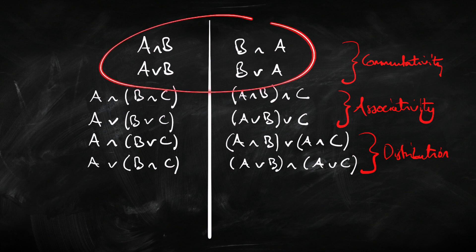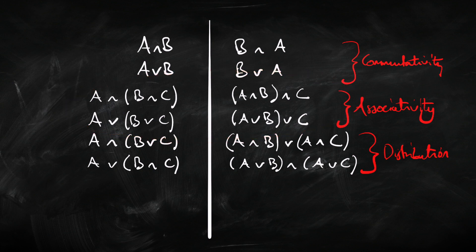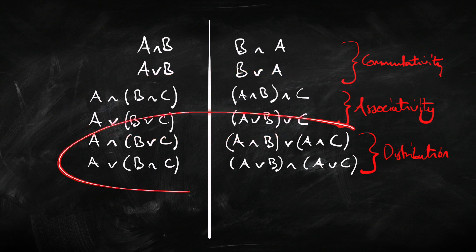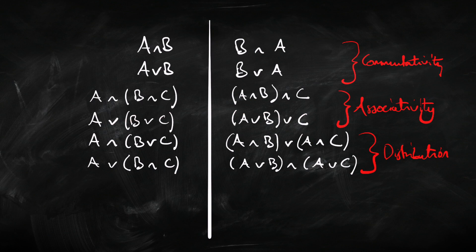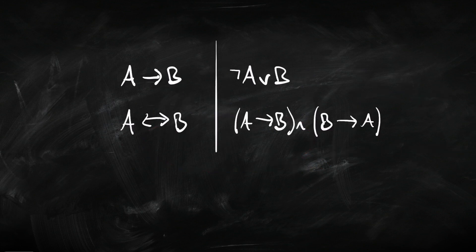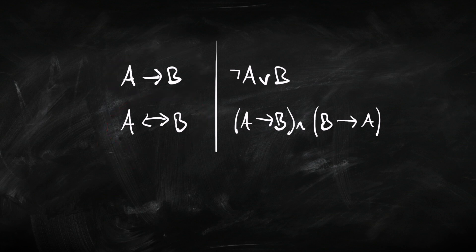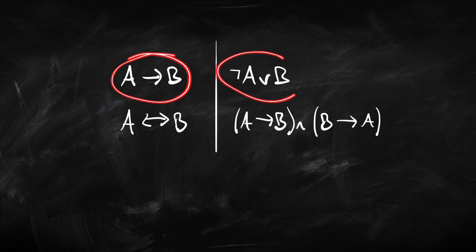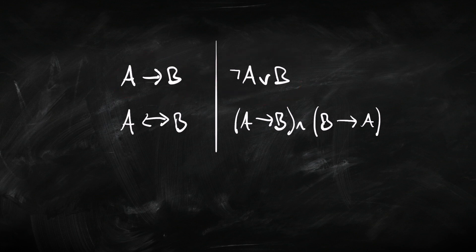Here's a quick reminder of all the equivalent schemes we're going to be interested in. We have the commutativity rules for AND and OR. We've got the associativity rules for AND and OR. We've got the distribution rules relating AND and OR together. We've got the De Morgan laws, which relate negation, conjunction, and disjunction. We've got the double negation laws. And then we have equivalences involving arrow and double arrow — we can rewrite the arrow in terms of negation and disjunction, and the double arrow using the single arrow and conjunction.